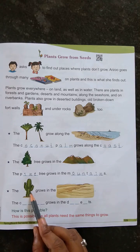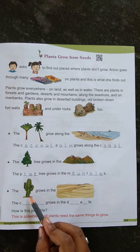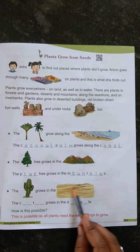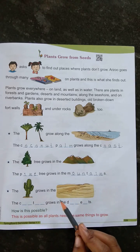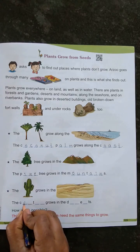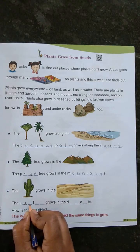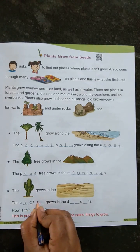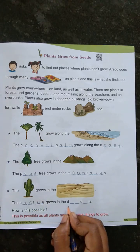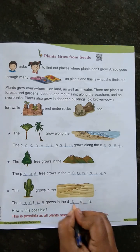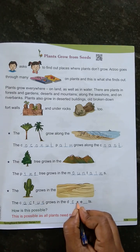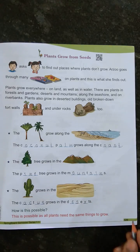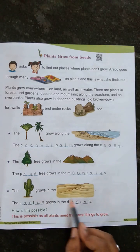What is this, children? This is a cactus. The cactus grows in the desert. C-A-C-T-U-S. Cactus. D-E-S-E-R-T. Desert. The cactus grows in the desert.